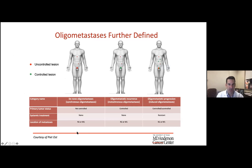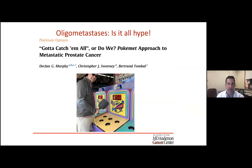When thinking about oligometastatic disease, you can have synchronous oligometastases — an untreated primary with small-volume metastatic sites — or metachronous oligometastases with a controlled primary but low-volume recurrence, or oligometastatic progression where only certain sites progress while others still respond to therapy. There's been a lot of discussion about this, including a nice editorial in European Urology by Declan Murphy about the 'polymet phenomenon' — essentially the whack-a-mole concept: do we have to chase after these metastases? What are patients dying from? Is this actually real or something we've created?